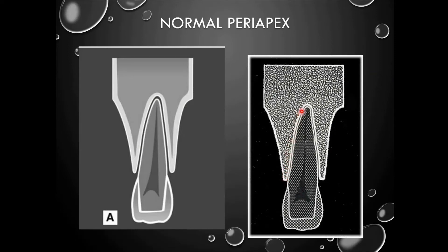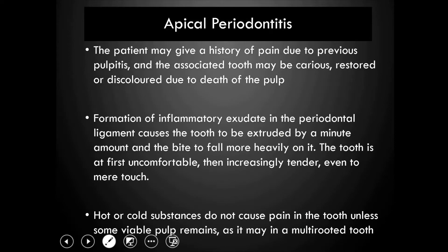Let us understand the normal peri apex. The normal peri apex has a lamina dura surrounding the root — a layer of alveolar bone that surrounds the root, which appears more radiopaque compared to the medullary bone. Next to the tooth and before the lamina dura, we have a radiolucent space which contains periodontal ligament fibers.